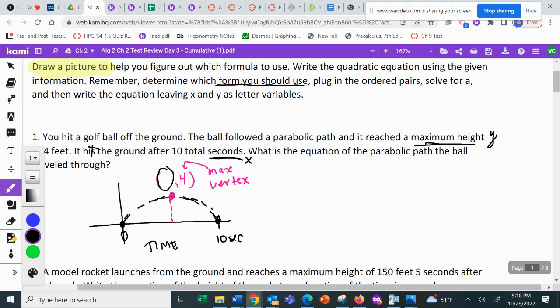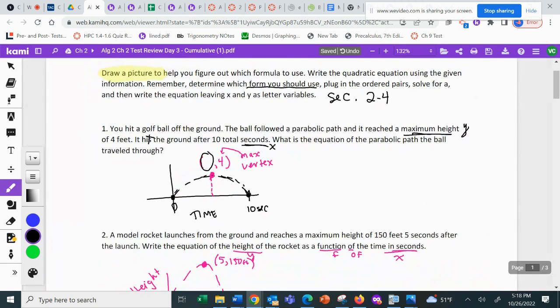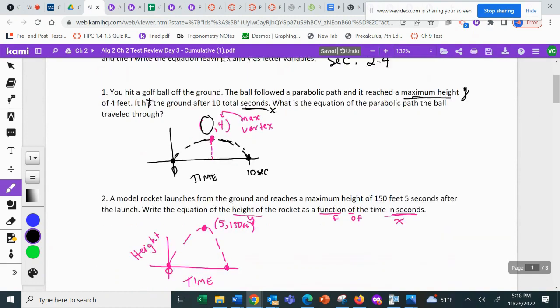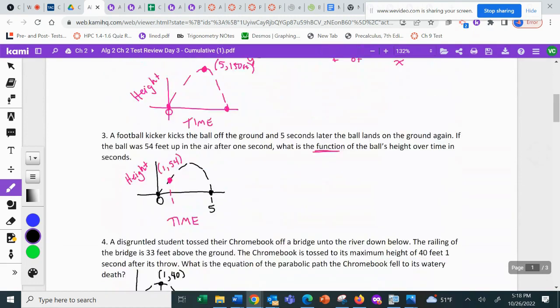You have to determine which form you should use, plug in those ordered pairs, solve for A, and then write the equation leaving X and Y as variables. So this is what we did for section 2.4. Or it's just they're not giving you pictures to start. You just have to read and figure it out.